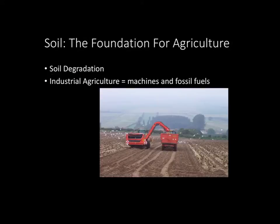Soil degradation is basically the result of something such as forest removal, cropland agriculture, or even overgrazing livestock. We need to practice sustainability so as not to ruin all of our soil for future generations. Because if future generations don't have any good, proper, nutritious soil, they won't be able to grow crops, and basically everything will deteriorate.